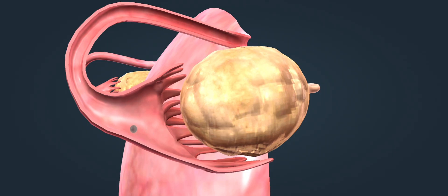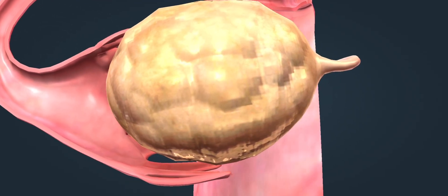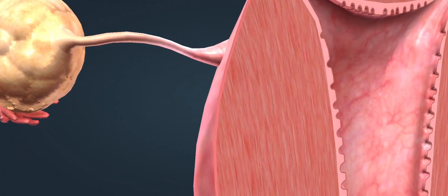Ovulation takes place in the middle. During ovulation, the mature egg is released from the ovary. It enters the fallopian tube and travels towards the uterus.